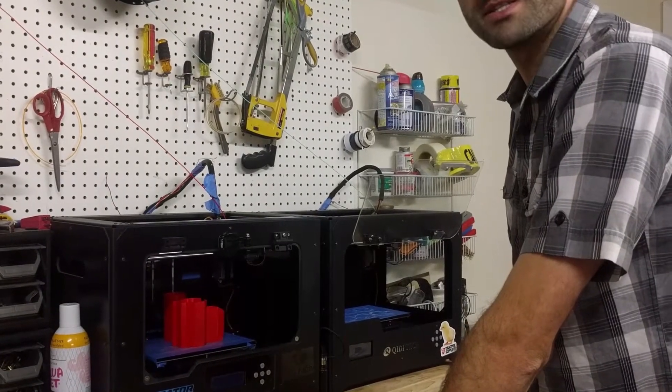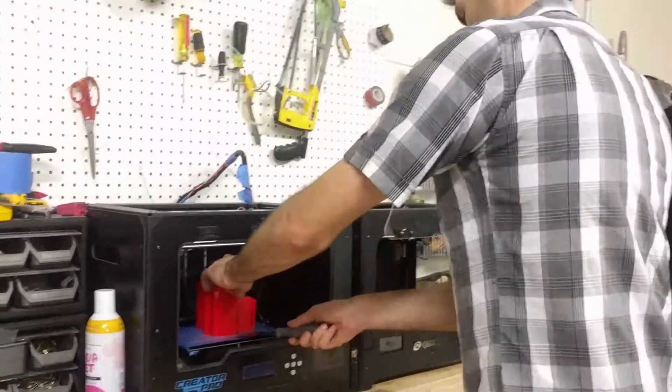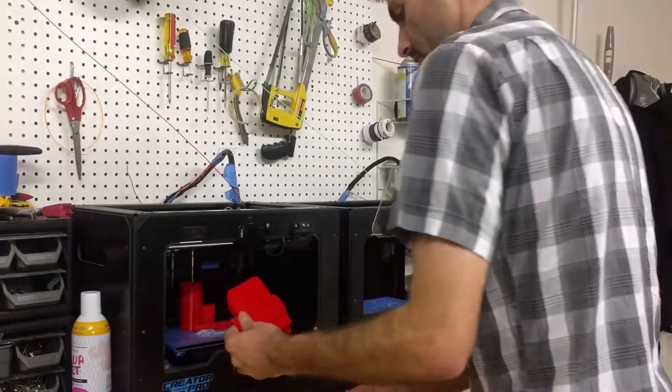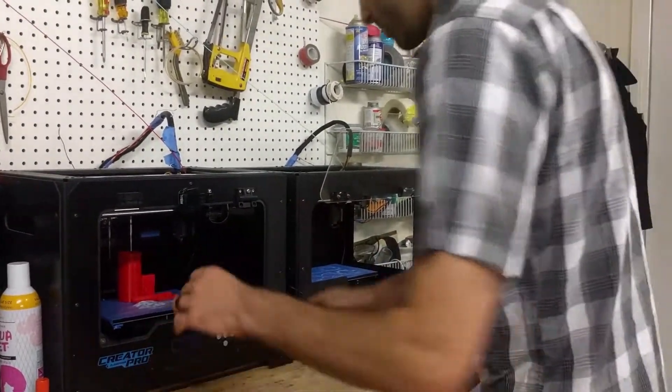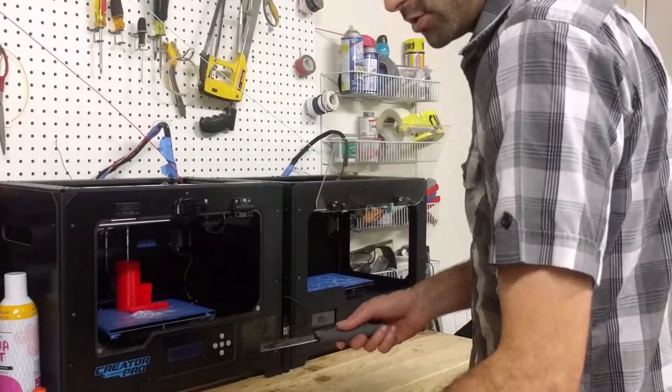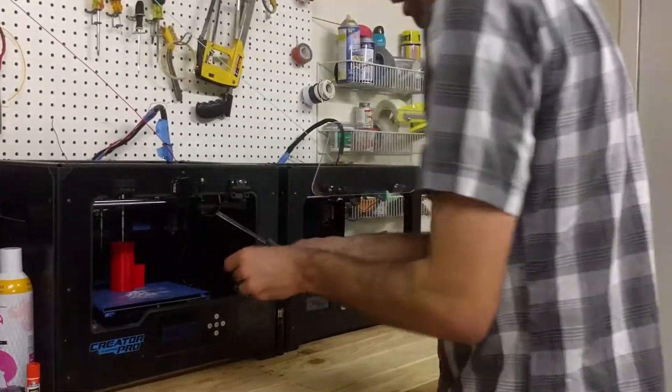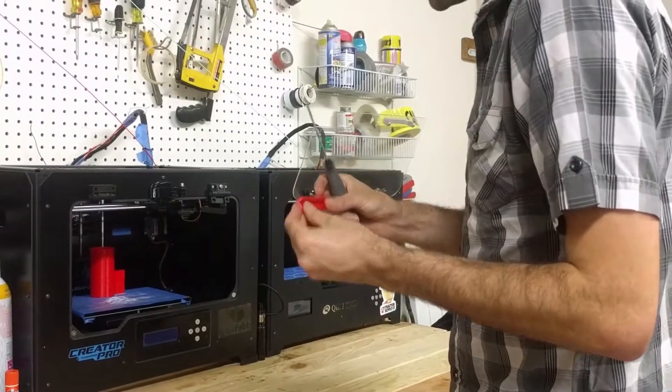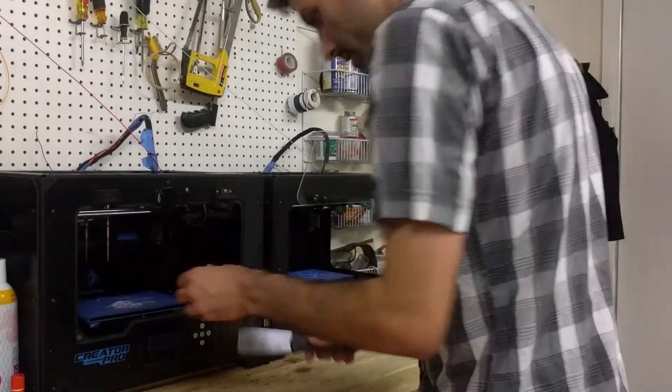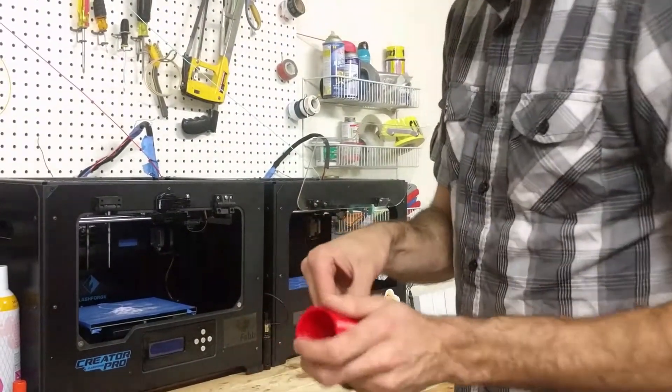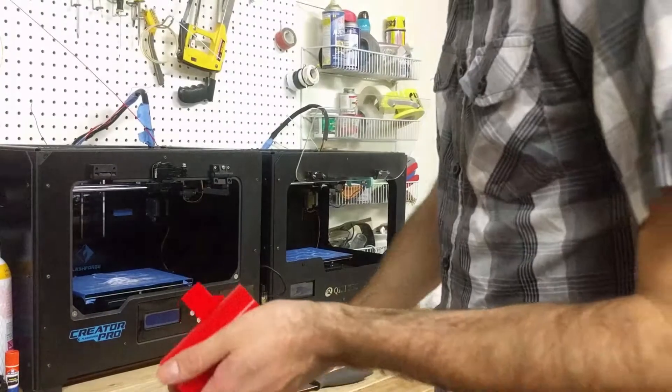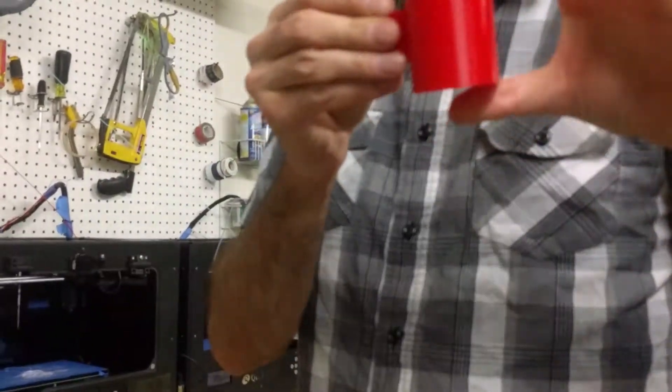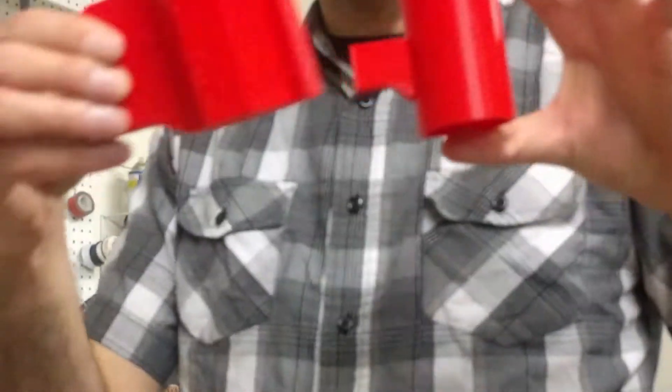The print turned out really good, so let's take it off the build plate and see what we got. I printed this in PLA plastic at about 0.2 layer height and I did it at about 50 millimeters a second. I did everything in one big print right there. I didn't have a cooling fan, but besides that, I'd say the parts came out really good.